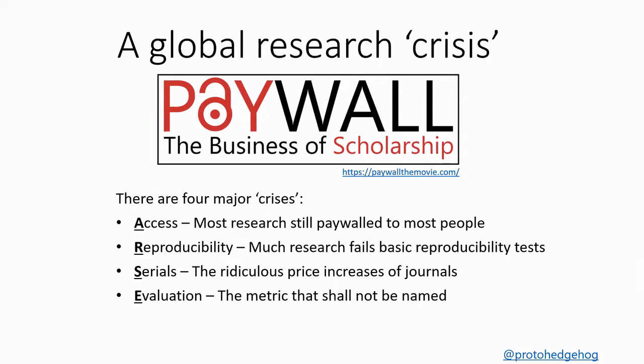The third is the serials crisis, which emphasizes the escalating costs of journals — something like 300% above the rate of inflation in the last 30 years — and is virtually unaffordable to any single research institute in the world. The fourth is the evaluation crisis, whereby the vast majority of researchers are still assessed based on metrics such as the impact factor or journal brand, as opposed to any intrinsic quality of their research.